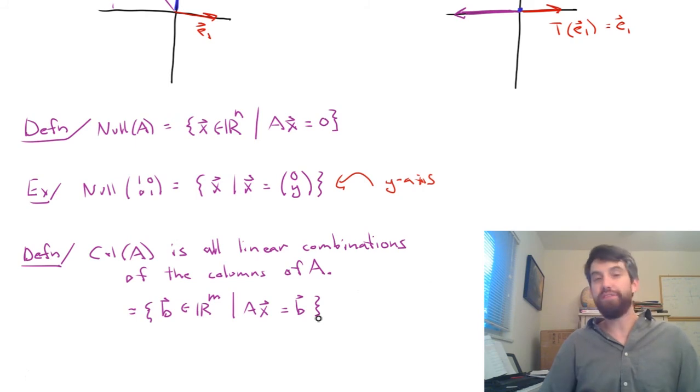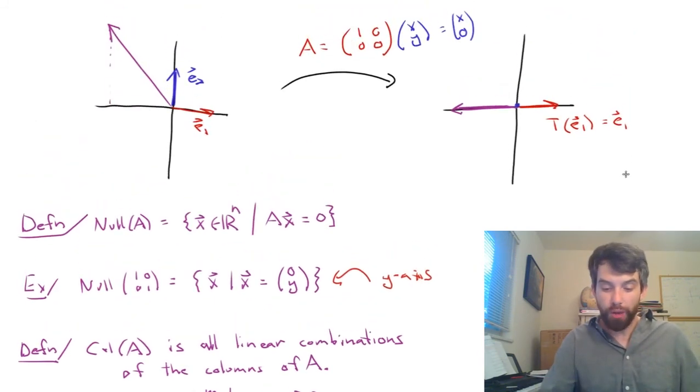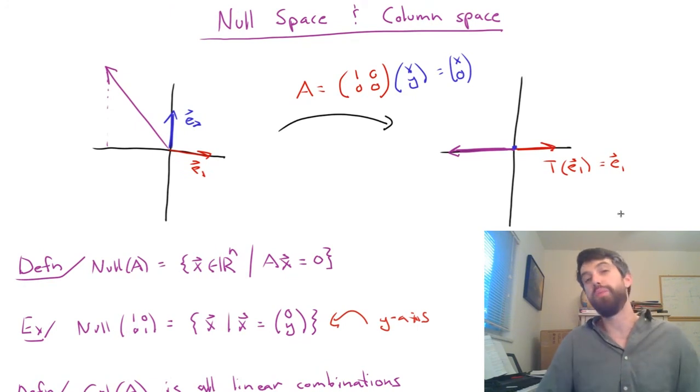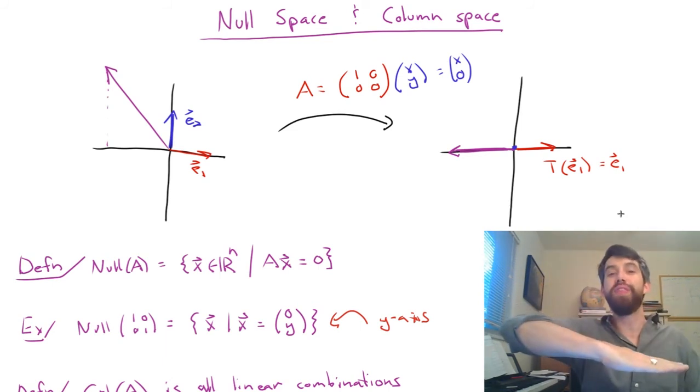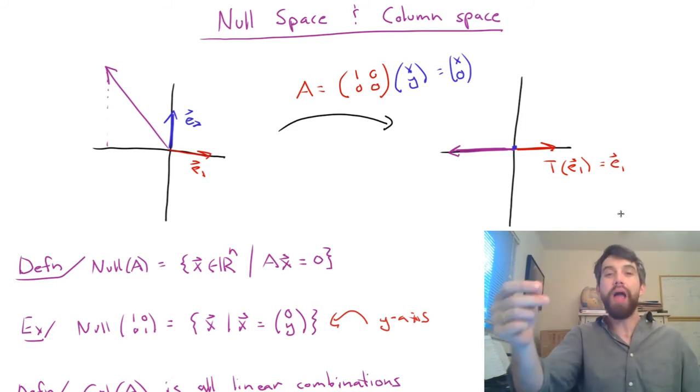All right, so that's my definition of the column space of A, and let's try to investigate what is the column space of A for the transformation that we had talked about earlier. Well, what did the transformation do? It took every vector and it sent it straight down to the X axis, sort of sending its Y component to zero.